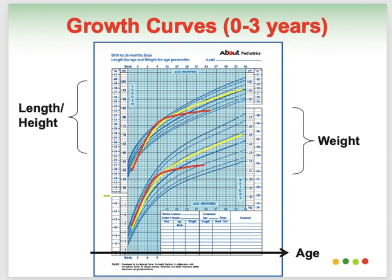We had already covered failure to thrive as a topic. Whenever there is malnutrition, all the systems are affected — there is delayed wound healing, increased morbidity and mortality, respiratory muscle dysfunction, and many other problems. When we get a malnutrition case, we determine whether it is protein malnutrition, rickets, or another type. The treatment is simply to provide nutrition if the problem is inadequate calorie intake, but if there is an underlying chronic disease, we must address that as well.